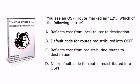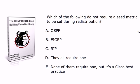We've got some wordy answers today, but there are details here we need to know. Question two: Which of these do not require a seed metric to be set during redistribution — OSPF, EIGRP, or RIP? Or do they all require one? Or do none of them require one, but it's a best practice?